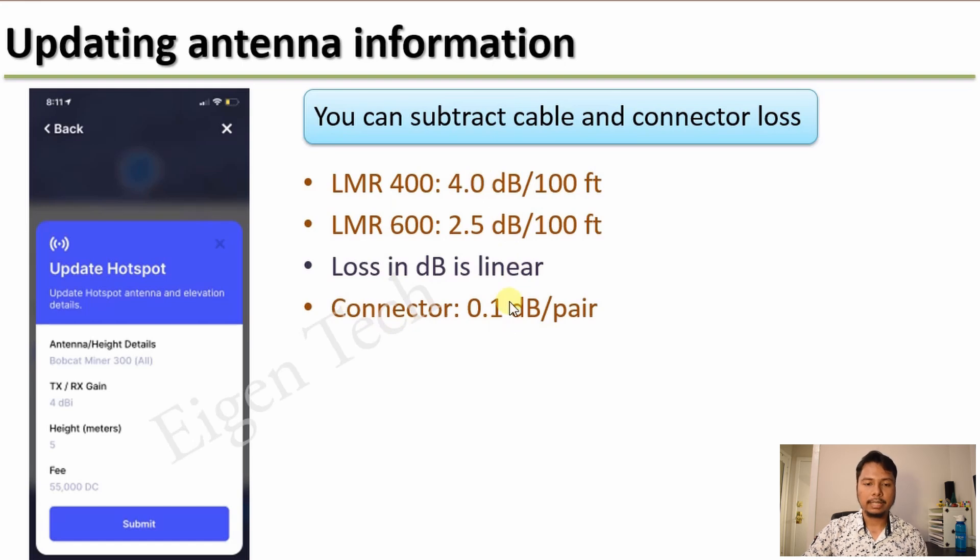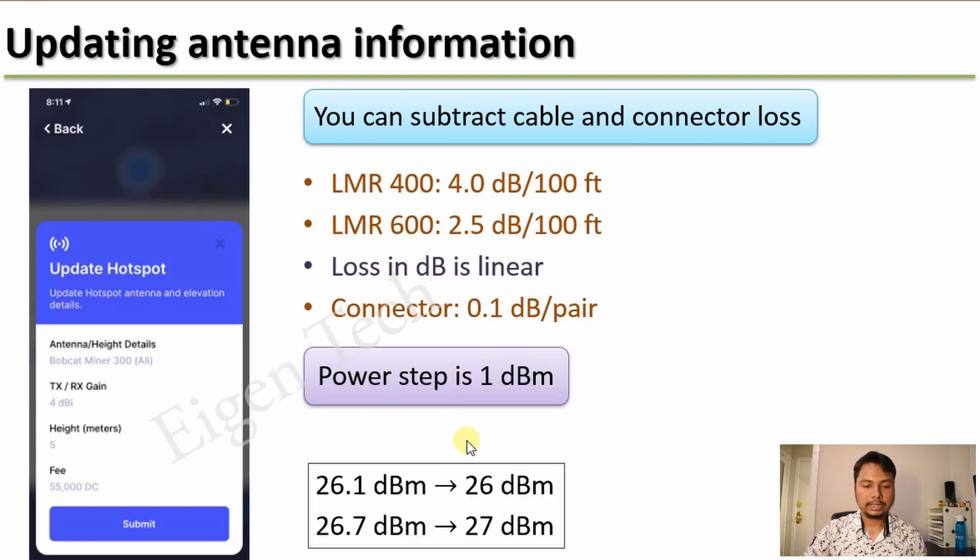Also, you can consider that the connectors which come with the cables have a loss of about 0.1 dB per pair, which means whenever you meet one male with female connector, you can consider there will be a loss of 0.1 dB. So usually there will be two connections if you are using a single cable, so that loss will be about 0.2 dB. So you can add 0.2 dB with the loss of the cable calculated from this number or the data sheet, and then you can subtract that number from the gain. So let's say you are using an antenna of 9 dBi. The total loss will be 2 dB from the cable and 0.2 dB from the connector, so 2.2 dB. So your gain was 9 dBi and you subtract 2.2 dBi from that, that will be 6.8 dBi. Also note that the step size of power that Helium uses is only 1 dBi, which means if your calculation says that transmitted power is going to be 26.1 dBi, it's going to use 26.